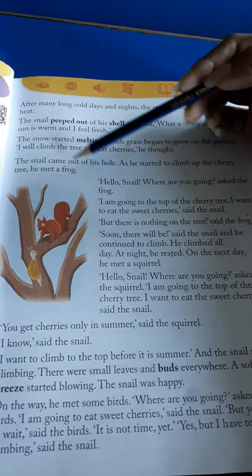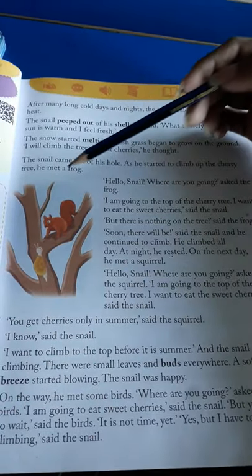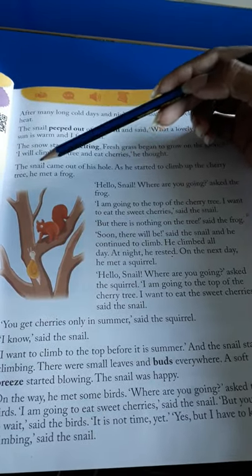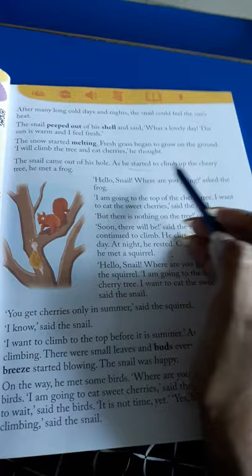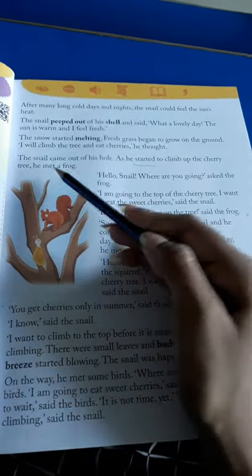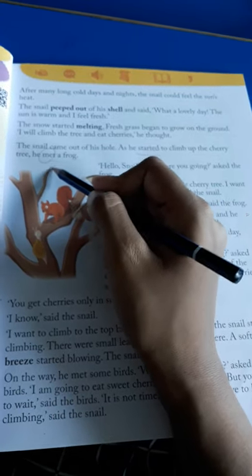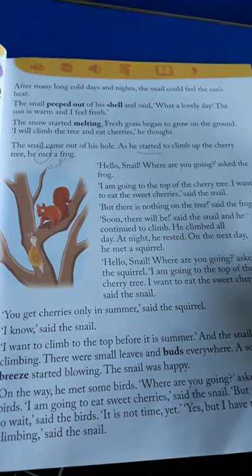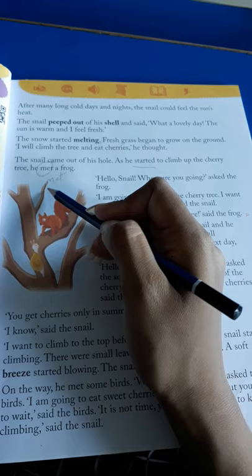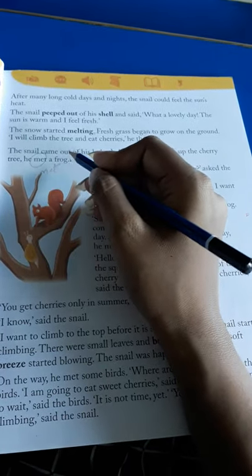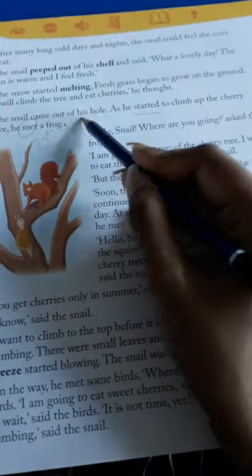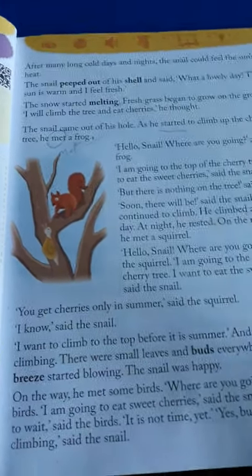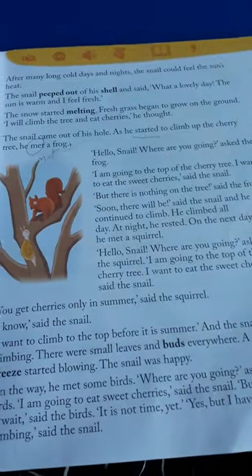The snail came out of his hole. As he started to climb up the cherry tree, he met a frog. As soon as the snail came out of the hole and started climbing the cherry tree, it met a frog. Now till here we will stop, and after this we will start the second part. You should start reading from here so that you will understand it clearly and be ready to pronounce the words.